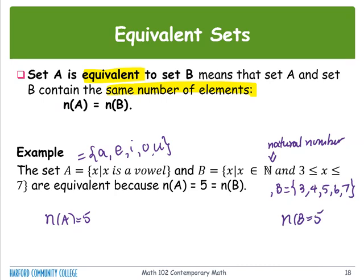By nature, Set A and Set B are totally different — each member is different — but the total number of members is the same. As long as the count of how many members are in Set A is the same as the number of members in Set B, we call them equivalent sets. So we can say A and B are equivalent because n(A) equals five, which is the same as n(B), even though they are totally different in nature.